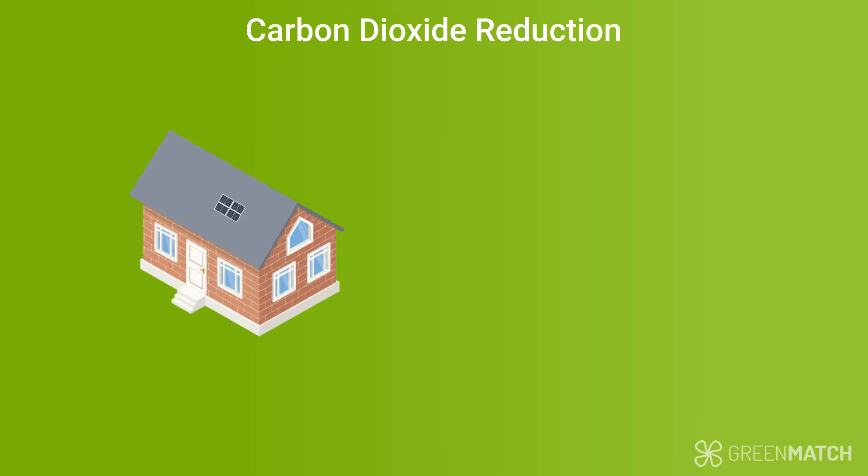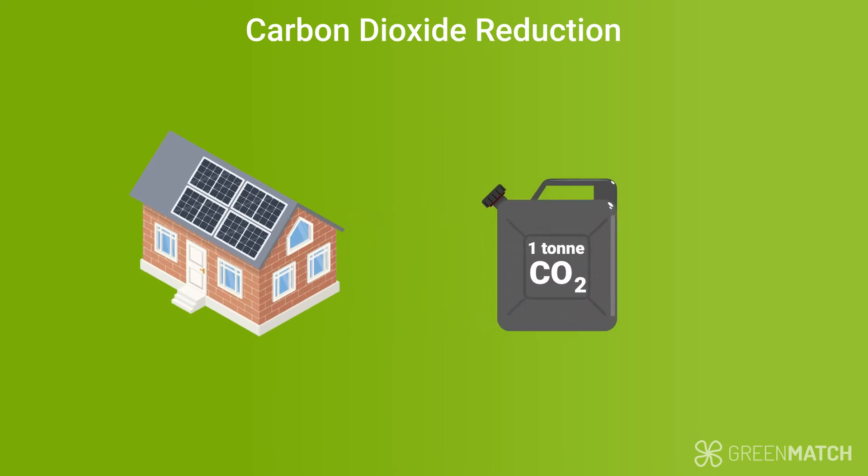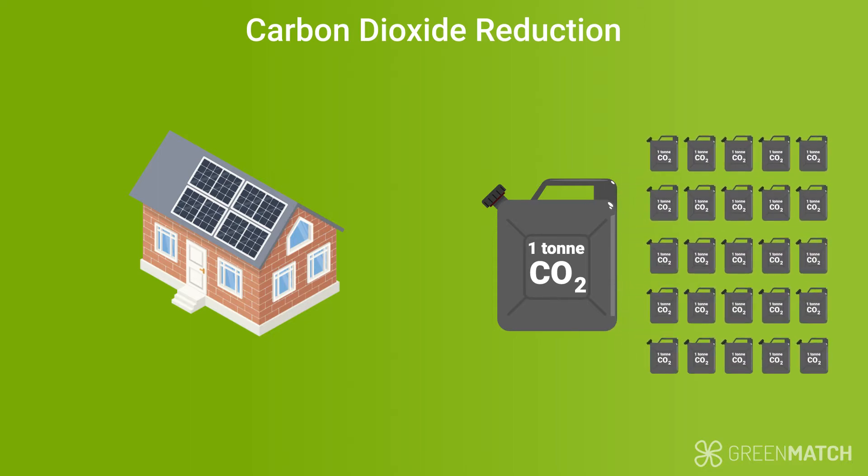For a typical household, solar panels can save around 1 tonne of carbon dioxide per year, which means one installation can offset approximately 25 tonnes of CO2 over its lifetime.